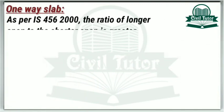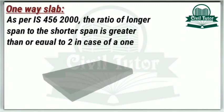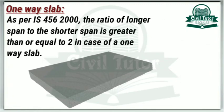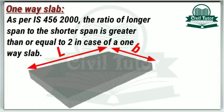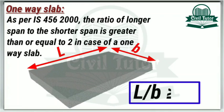As per IS-456-2000, in case of a one-way slab, the ratio of longer span to the shorter span is greater than or equal to 2. That is, the ratio of length to the breadth of a slab must be equal to or greater than 2 in case of a one-way slab.